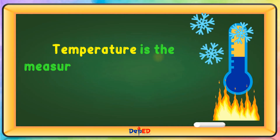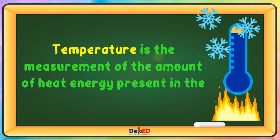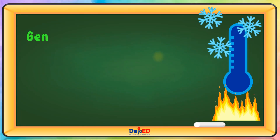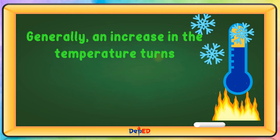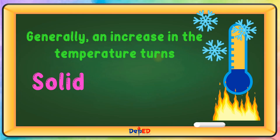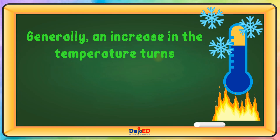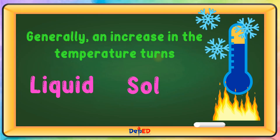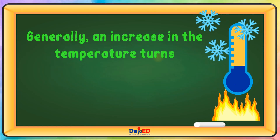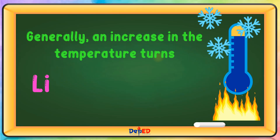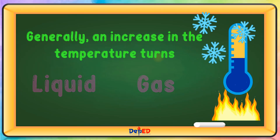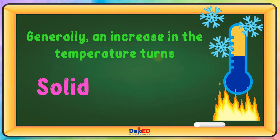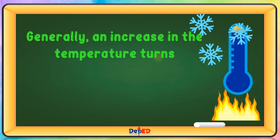Temperature is the measurement of the amount of heat energy present in the surroundings. Generally, an increase in temperature turns solid into liquid. Melting liquid into solid is called freezing. Liquid to gas is called evaporation. Solid to gas is called sublimation.